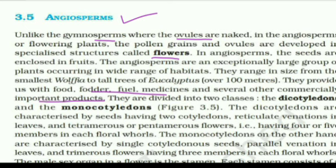Angiosperms are divided into two classes: Dicotyledons and Monocotyledons. In Dicotyledons we will always get two cotyledons, and in Monocotyledons we will only get one cotyledon.